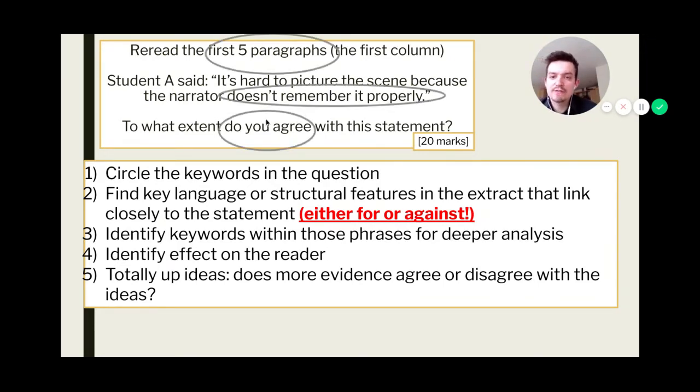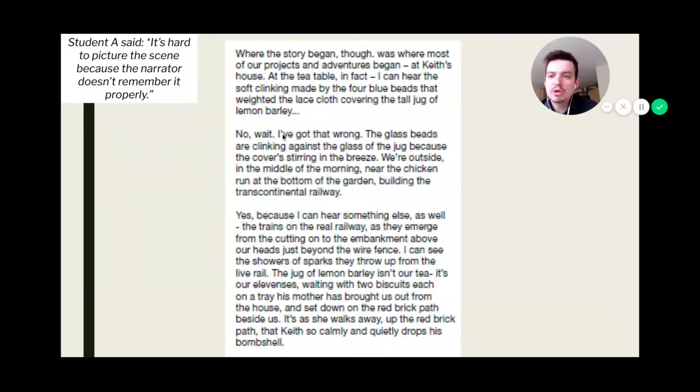So the keywords, I would say, are as follows. The first five paragraphs, you need to know what you're looking at and only those sections. If you answer outside those sections, you're not going to score any marks. What are you looking to analyse? You're looking to see if you think the author, the narrator doesn't remember it properly. And again, how far do you agree with the statement for this? So we're going to look at the first three paragraphs to begin with, just to model this idea for you, first of all. I'm going to give you one example, and then I'm going to ask you to do exactly the same.